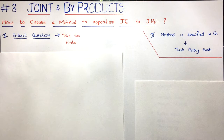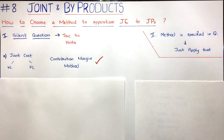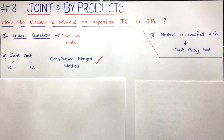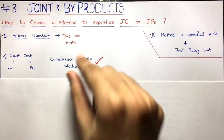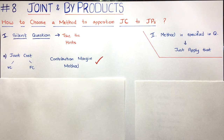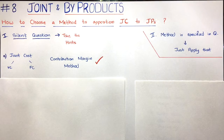In a silent question, you have to take the decision. So how do you do this? You look for hints. The first case: if joint cost segregation is given into variable cost and fixed cost — for example, 5000 joint cost is given and 2500 is variable and 2500 is fixed — then you have to apply the contribution margin method, because only in the contribution margin method is this segregation important. If you apply some other method like NRV instead, you will lose marks.